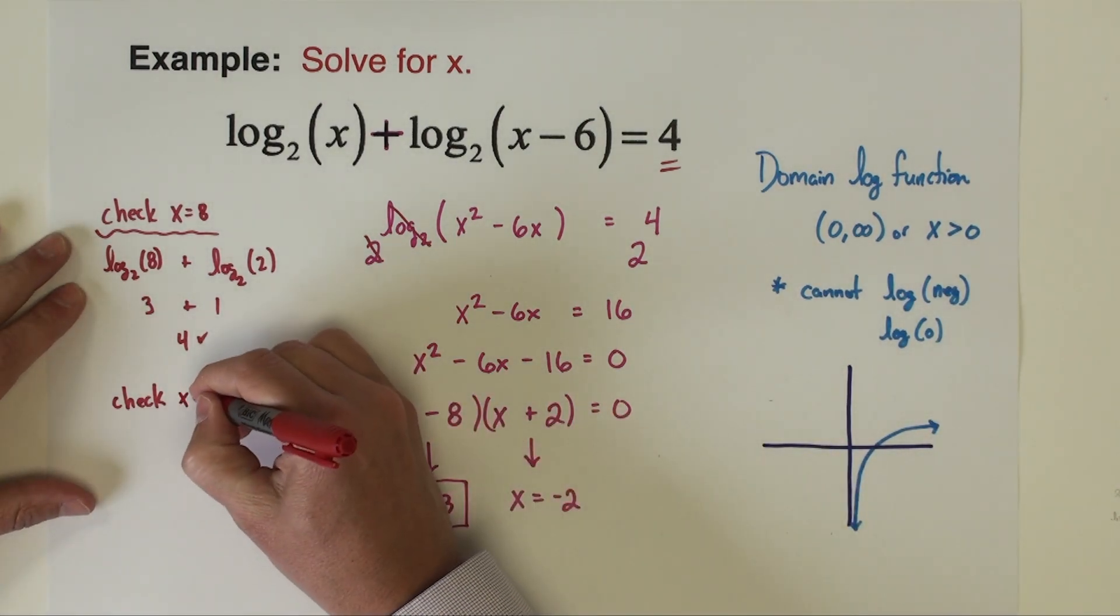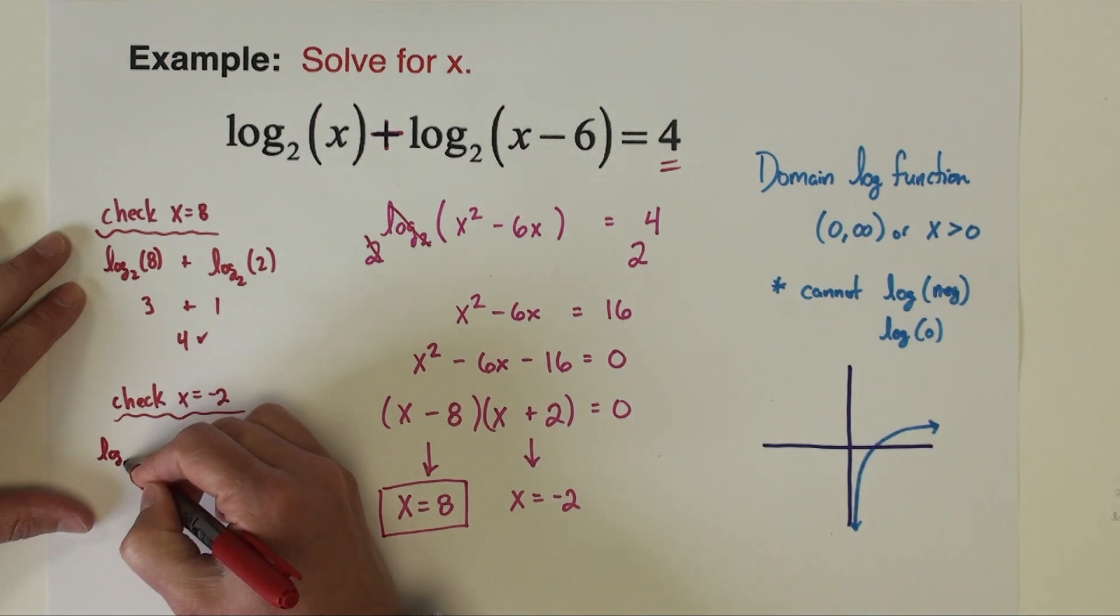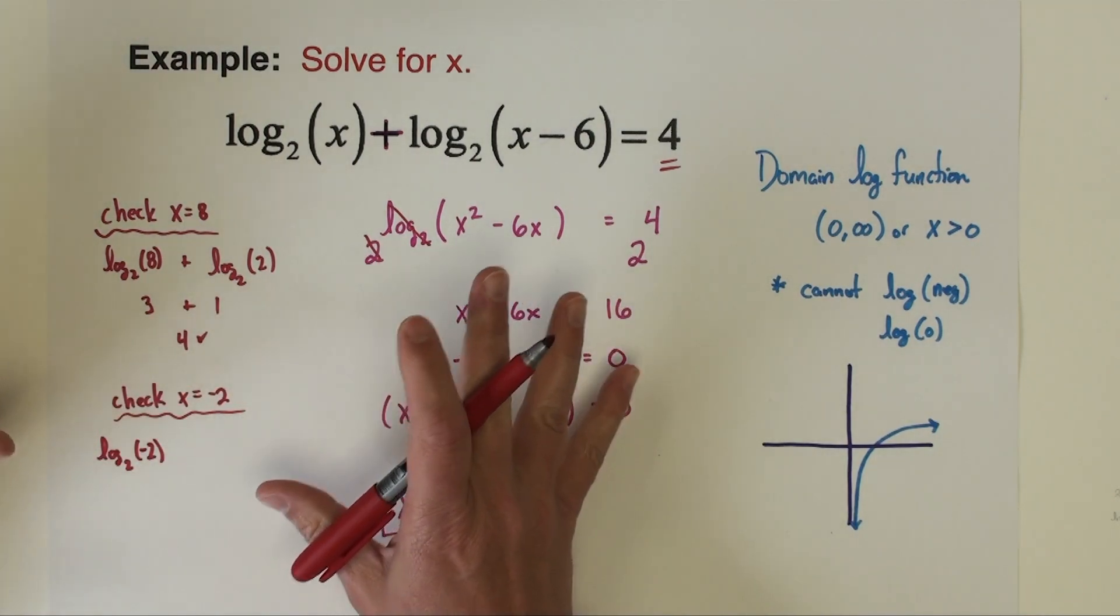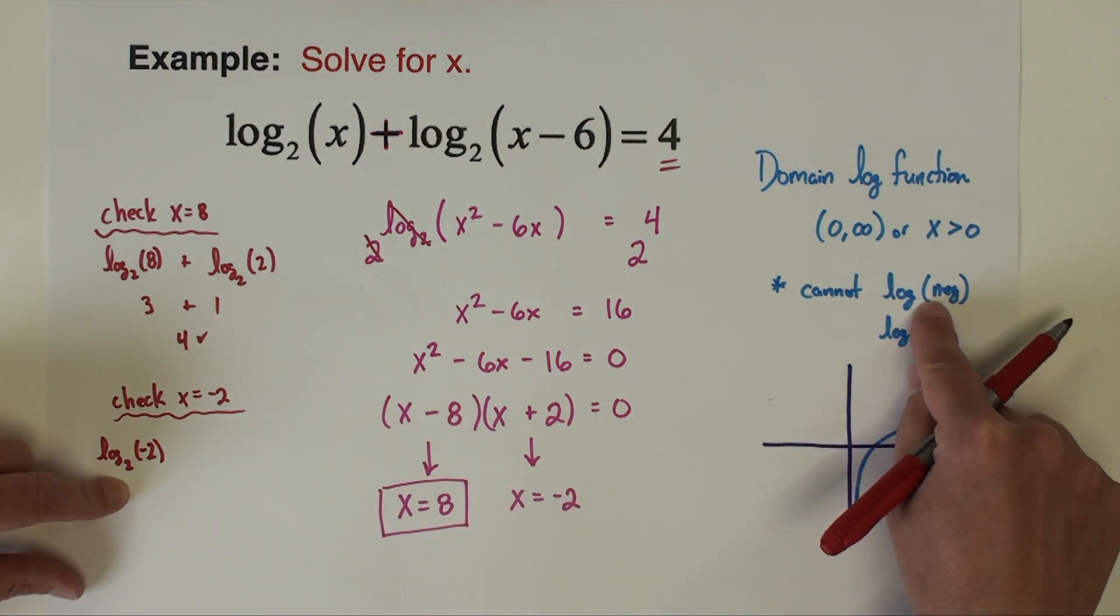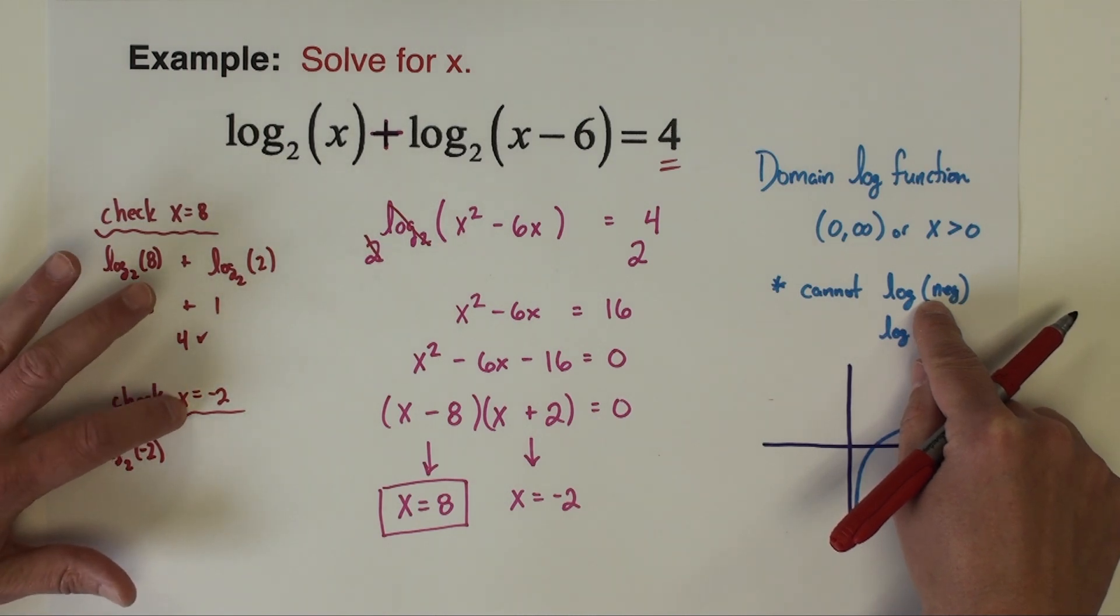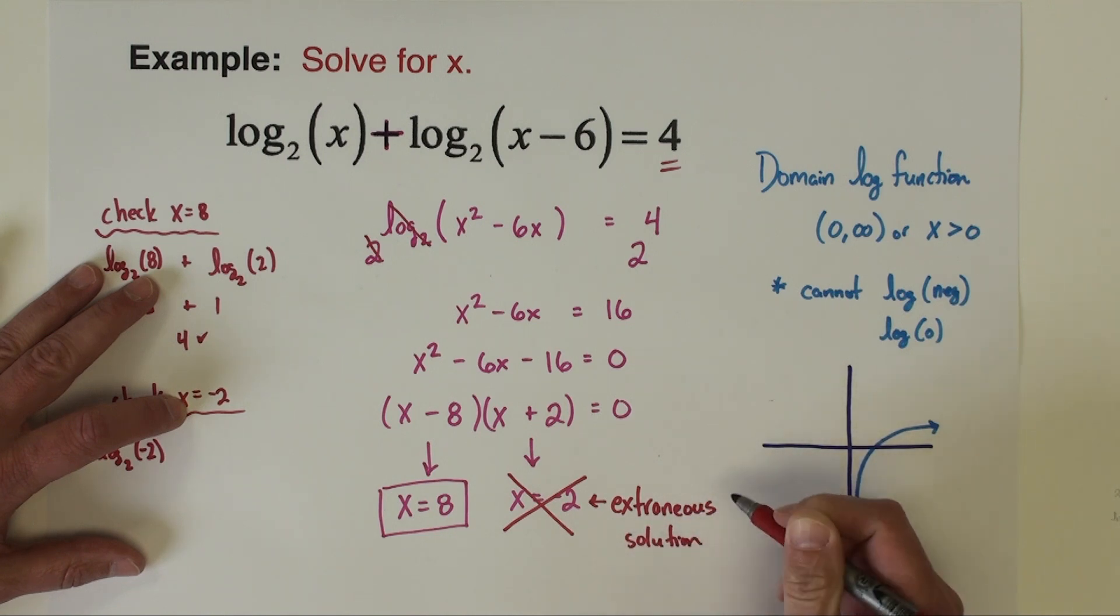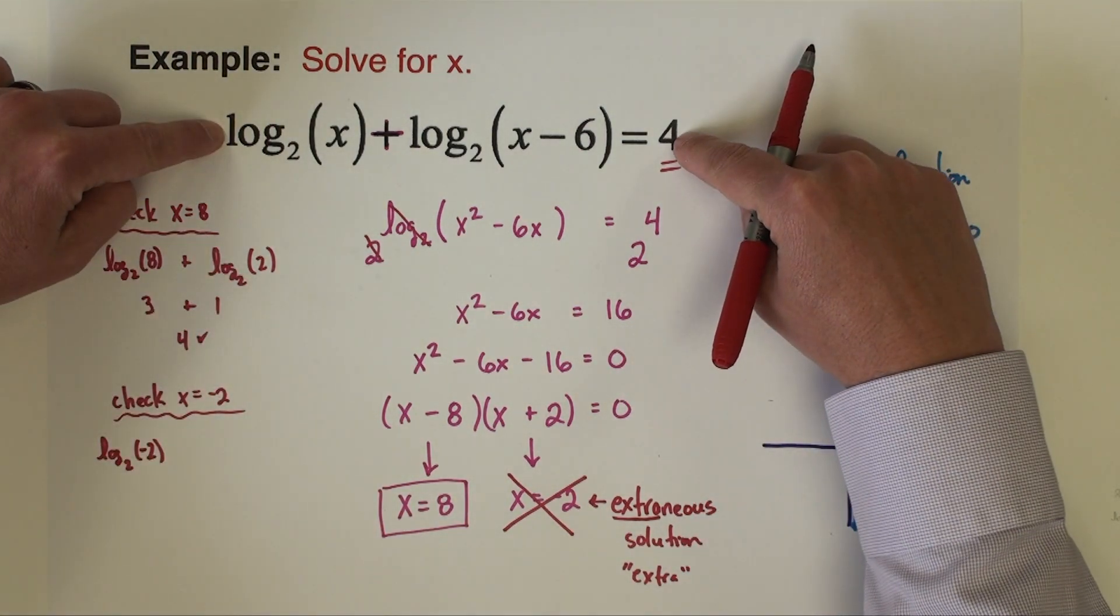Let's check x equals negative 2. If I put negative 2 in there, we have log base 2 of negative 2. I can stop right now. I don't need to go further. That's the logarithm of a negative number. I cannot take the logarithm of a negative number, so this solution fails. We're going to throw that away. That answer is what we call an extraneous solution—a solution to this equation but not a solution to the original.